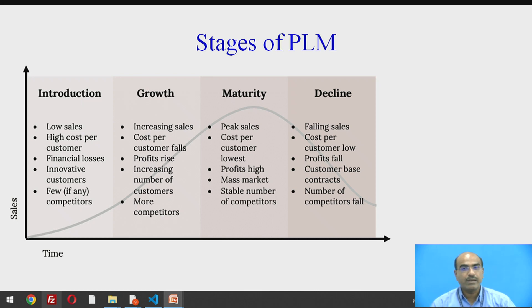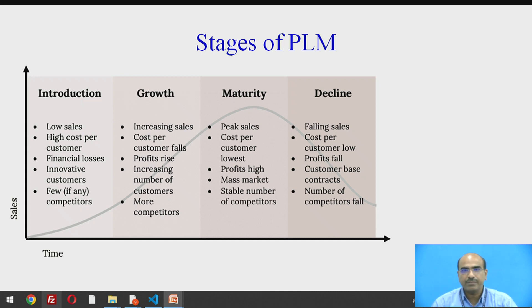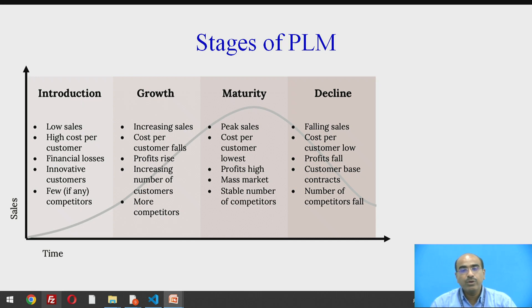After maturity comes decline. Decline is a peculiar symbol of exiting from the market — the dispose-off or retirement stage comes into picture. Falling sales is the first indicator that the product is now declining. Cost per customer acquisition is lowered, profit considerably falls down, and the customer base contracts as customers may have moved to competitors. Number of competitors also falls, as they too may be experiencing the same sort of decline.